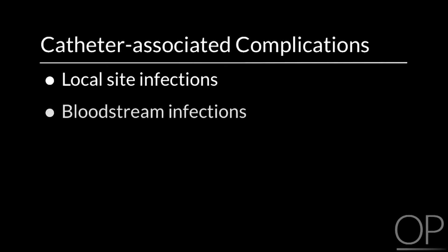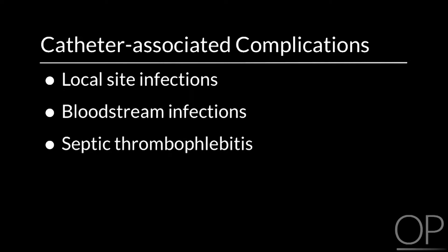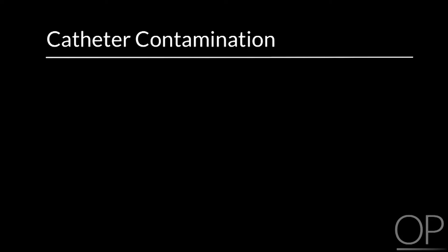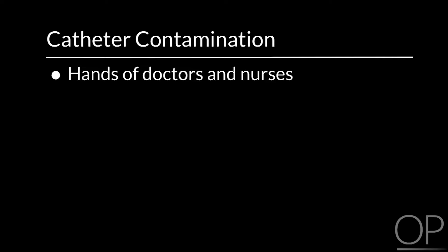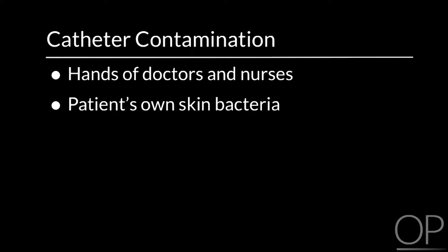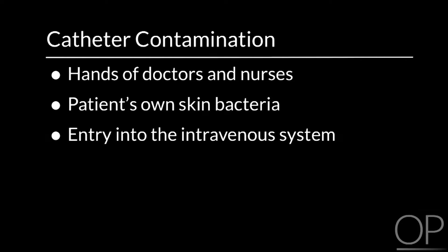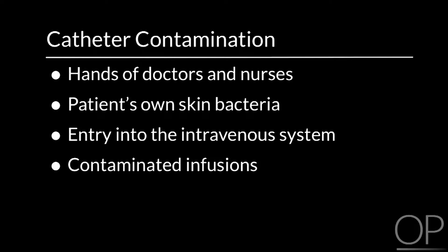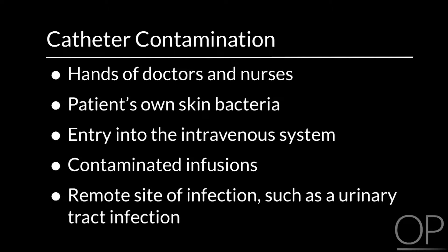We all know that intravascular catheters are an important part of medical care, especially in intensive care units. However, catheters place patients at risk for complications including local site infections, bloodstream infections, septic thrombophlebitis, endocarditis, and other infections such as lung abscesses. Catheters can become contaminated in a variety of ways — by the hands of doctors and nurses, the patient's own skin bacteria, entry into the intravenous system, contaminated infusions, or from a remote site of infection such as a urinary tract infection.